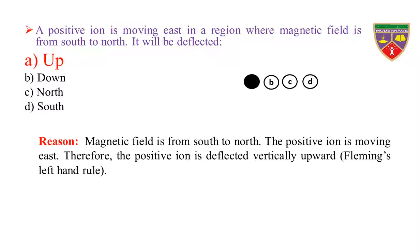Reason: Magnetic field is from south to north. The positive ion is moving east. Therefore, the positive ion is deflected vertically upward by Fleming's left hand rule. Hence, the positive ion is deflected up.